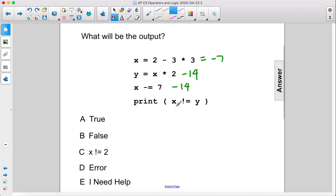Then we have print x is not equal to y. Well, x is currently negative 14, and so is y, negative 14. Therefore, x is equal to y. So this is a false statement. The answer is b.